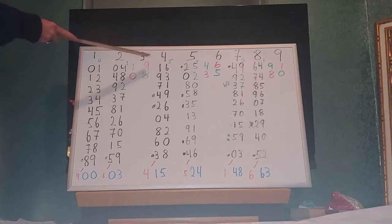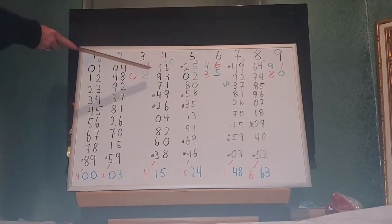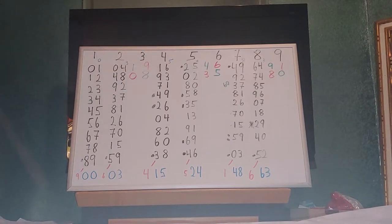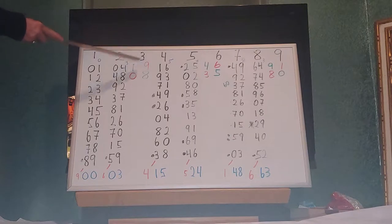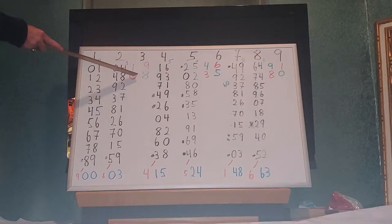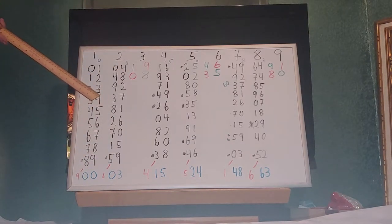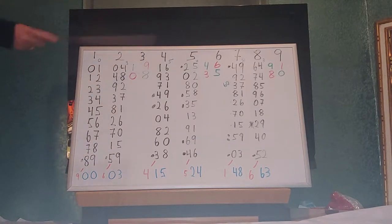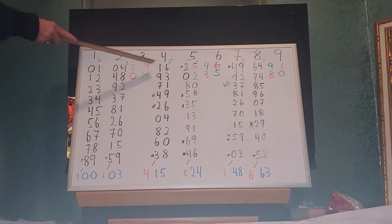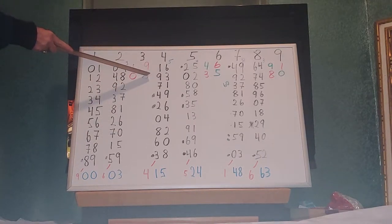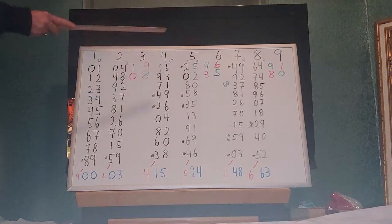3 squared is 9. 33 squared is 1,089. 333 squared is 110,889. The pattern continues: a billion 3s squared gives you 999,999,999 ones, then 1, 0, then 999,999,999 eights, then 1, 9. So 6 and 9 do the same exact thing.